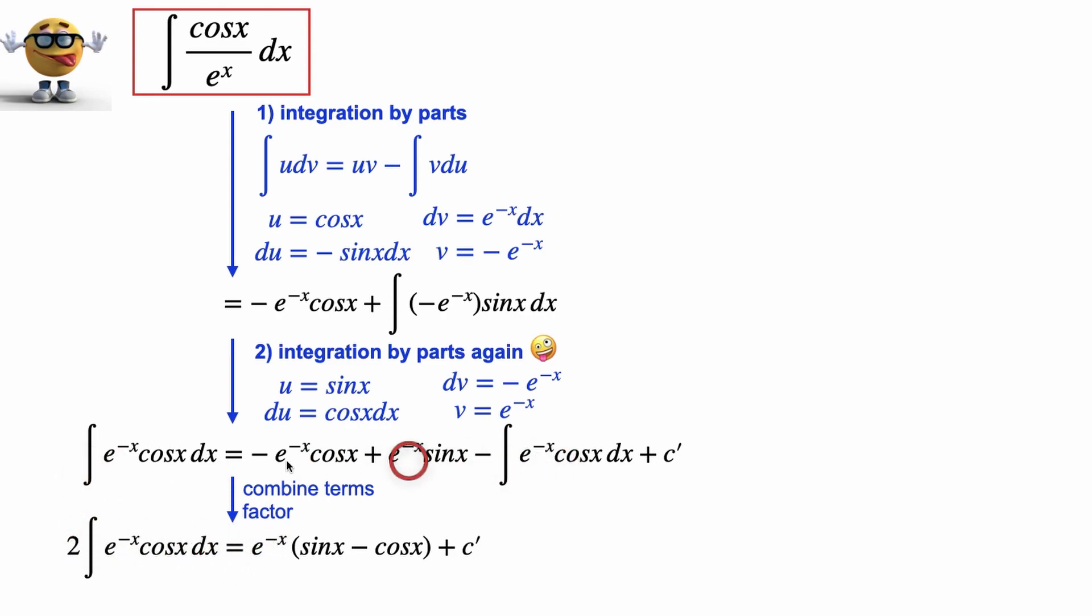So there's now two of these integrals when this comes to the other side. And I factored out the e to the negative x out of here. And this cos x is negative. So I just rearranged these terms and had the negative on this side rather than deal with the negative right here. To find out what the integral is, we divide by two to get the integral we want.